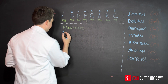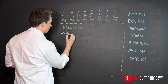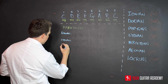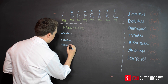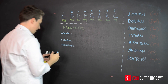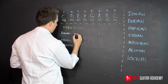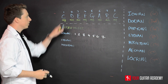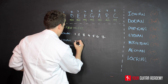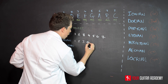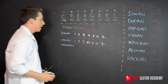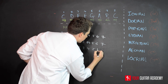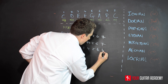Starting with Ionian, then Lydian underneath, then Mixolydian underneath that. The Ionian scale formula is the simplest: 1, 2, 3, 4, 5, 6, 7 — it's the major scale. The Lydian is 1, 2, 3, sharp 4, 5, 6, 7. And the Mixolydian is 1, 2, 3, 4, 5, 6, flat 7.